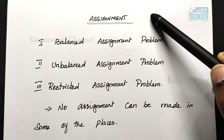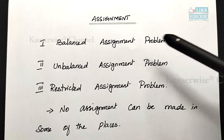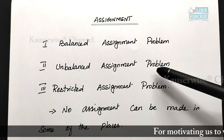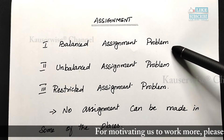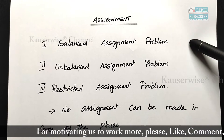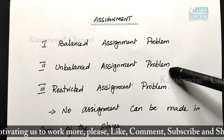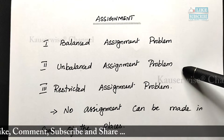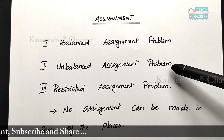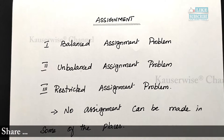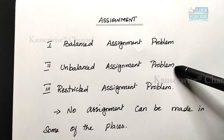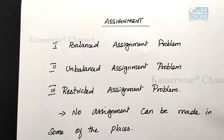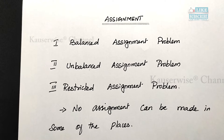In assignment problems there are two types: the balanced assignment problem and the unbalanced assignment problem. In a balanced problem, both rows and columns are equal — that is, a square matrix. Unbalanced means the number of rows is not equal to the number of columns. To solve an unbalanced problem, you first need to convert it to balanced by adding either a dummy row or dummy column accordingly. These have been covered in a separate video — links are in the description box.